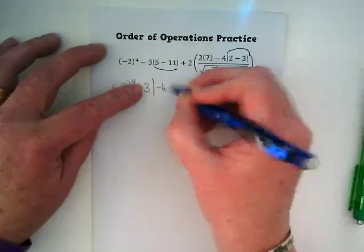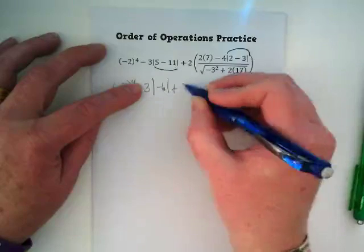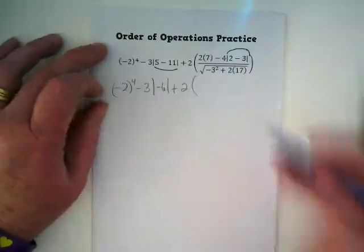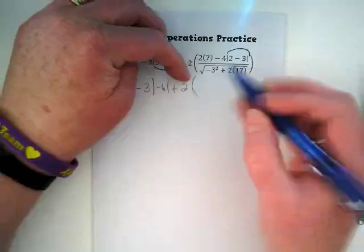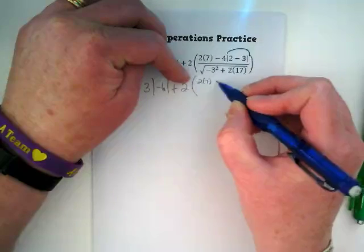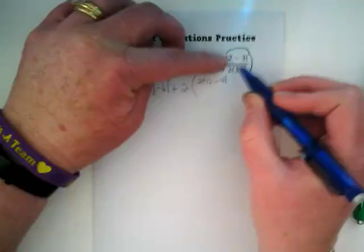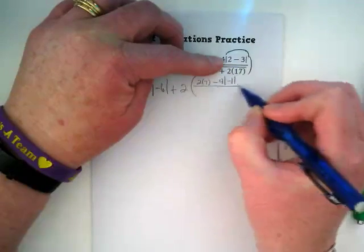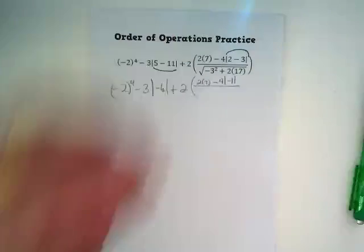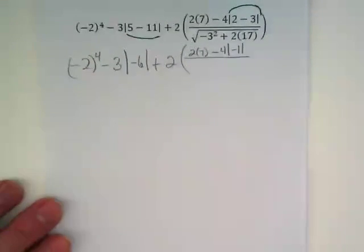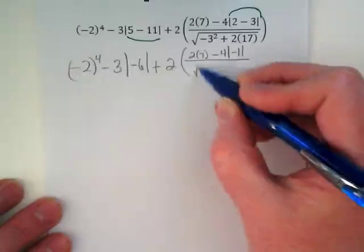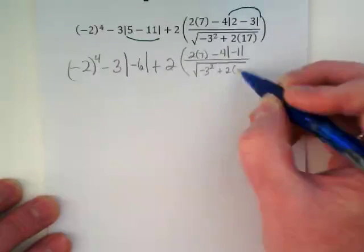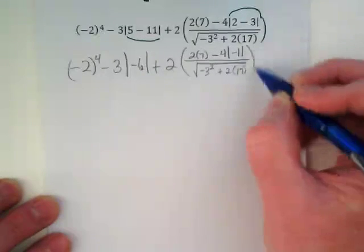So the absolute value is being simplified to -6 plus 2. And then we have got this whole giant mess in this grouping symbol on the right side of the problem. So we are going to keep the 2 out in front and put the parenthesis. We are going to rewrite the 2 times 7 minus the 4 times the absolute value of what is 2 minus 3? Okay. And then draw the vinculum. Does that help? And underneath it we have this radical sign and we are just going to rewrite it as it is for now. We will get to it as we continue working on the problem. And then end the parenthesis.